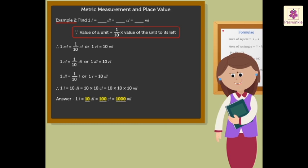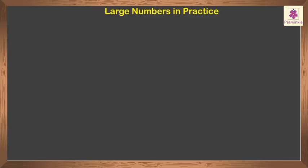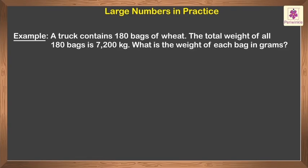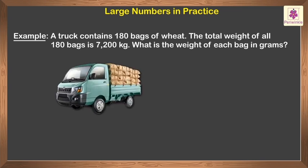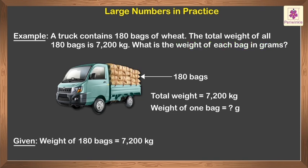Kids, now try finding the relation between other units of measurements on your own. Let us solve a few word problems. A truck contains one hundred eighty bags of wheat. The total weight of all one hundred eighty bags is seven thousand two hundred kilograms. What is the weight of each bag in grams?